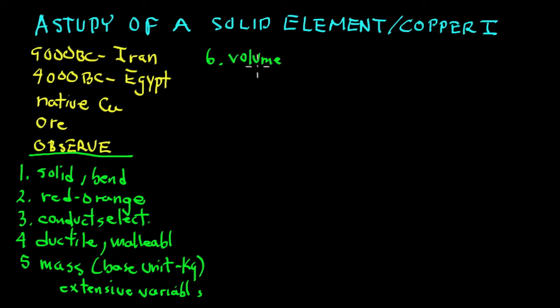If it's a regular object, we can calculate a regular object. Volume equals length times width times height. Or if it's a cylinder, the volume is like a piece of pipe that's solid.